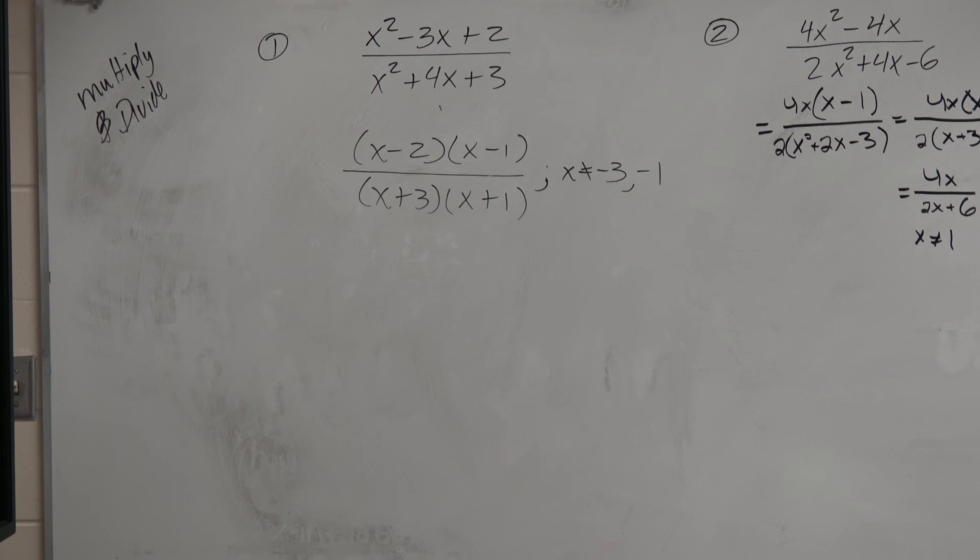And then again, it looks very, very tempting for us to want to divide these out because they're very similar. They're very close to each other, right? But they're just off a little bit. But again, unless it's the exact same number, term, or expression, we cannot divide them out. So this is it. This is just our simplified factored form. Nothing divided out.